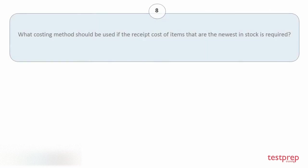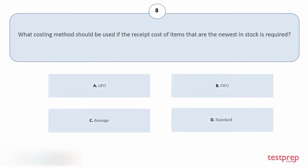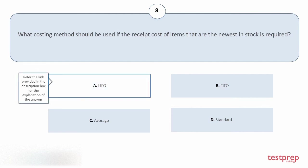Question number 8: What costing method should be used if the receipt cost of items that are the newest in stock is required? Your options are: a) LIFO, b) FIFO, c) Average, d) Standard. The correct answer is option a.